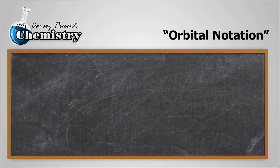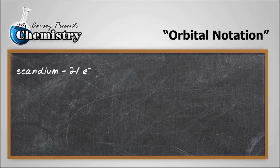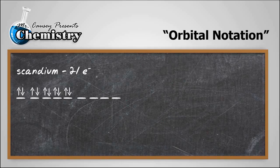So what is the orbital notation for scandium? Well, scandium has 21 electrons. And let's go ahead and write those out. You'll see that we follow Hund's rule. Cool. And there we have it. There's our 21 electrons put into the orbital notation.